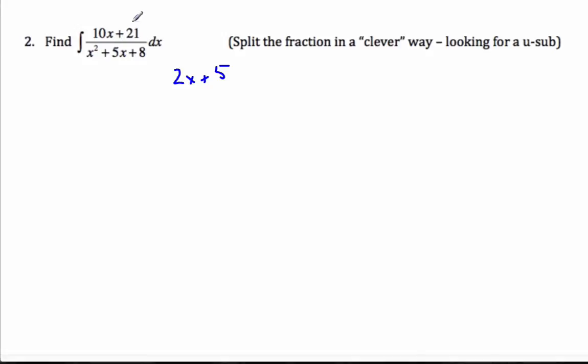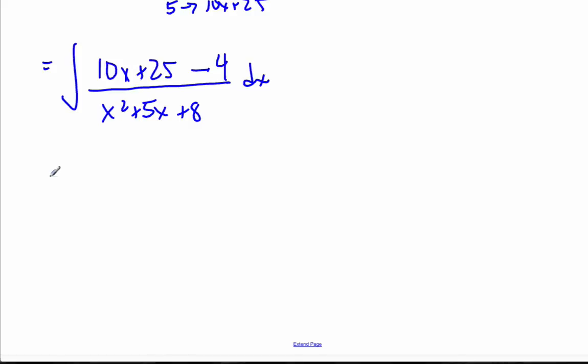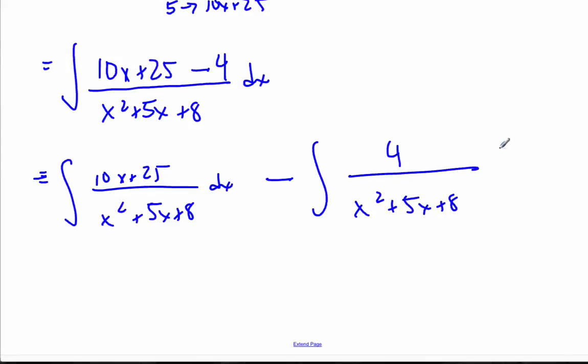Which is not 10x plus 21, I need to factor that. But, it's almost, if I multiply by 5, it's then going to be 10x plus 25. And that's 4 less than that. So, what I could do is I could rewrite this as 10x plus 25 minus 4. That's the same thing over x squared plus 5x plus 8 dx. And now that I've rewritten as such, then I can go even further and say that I have the integral of 10x plus 25 over x squared plus 5x plus 8 dx minus the integral of 4 over x squared plus 5x plus 8 dx.